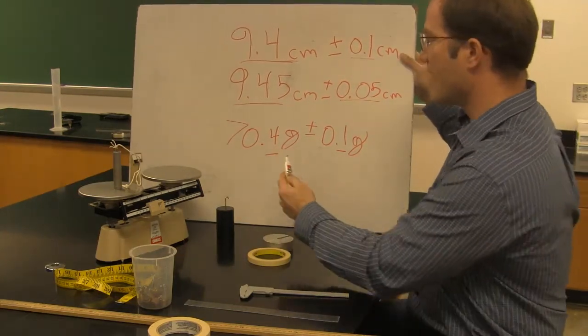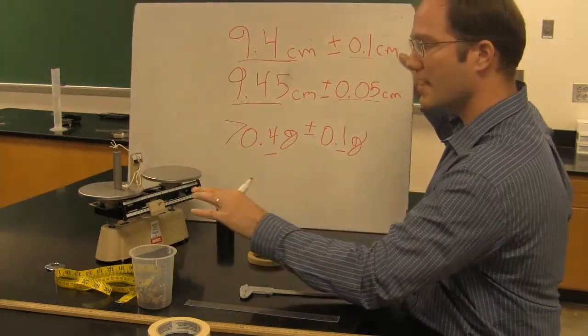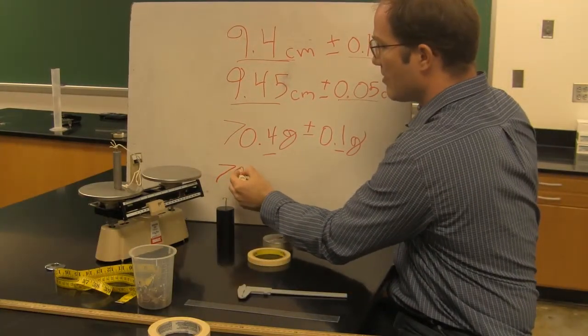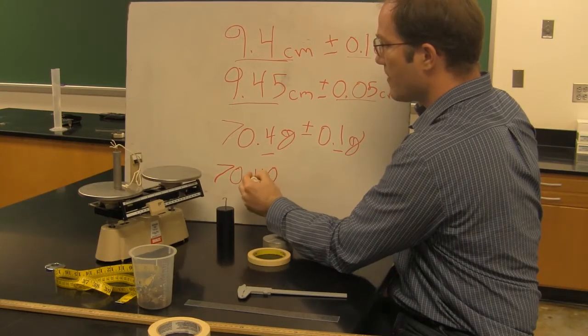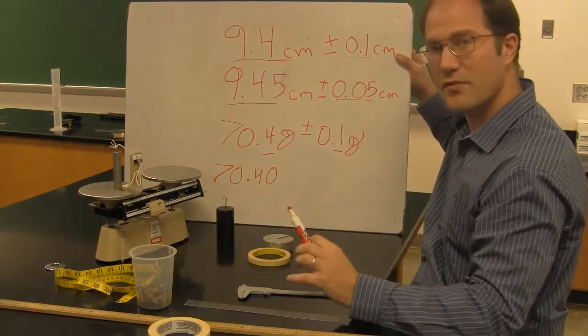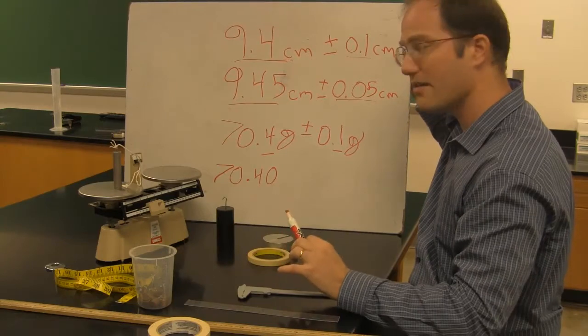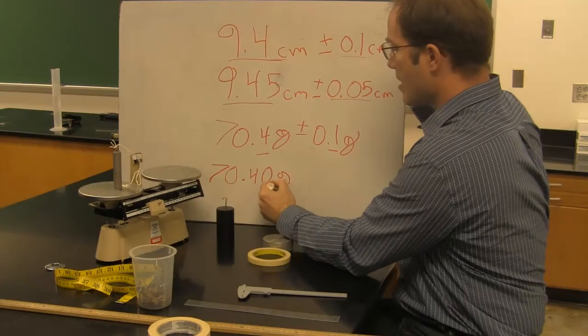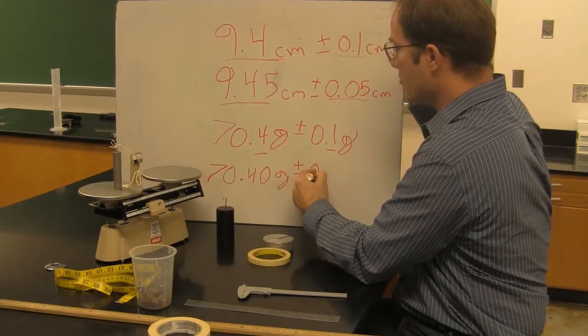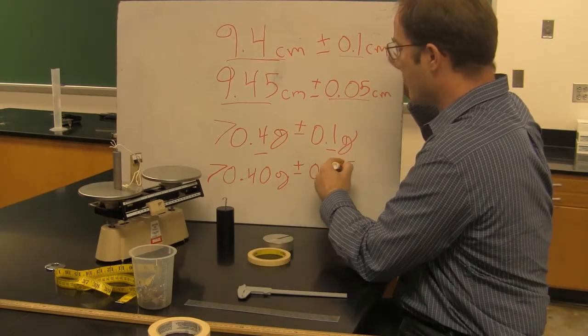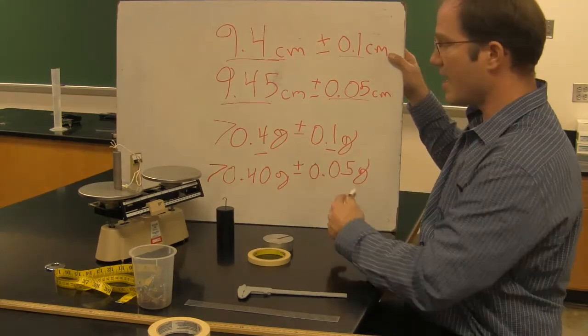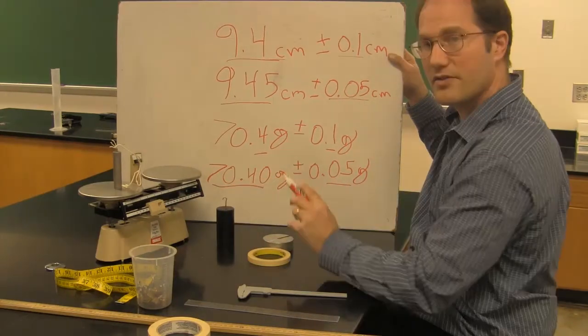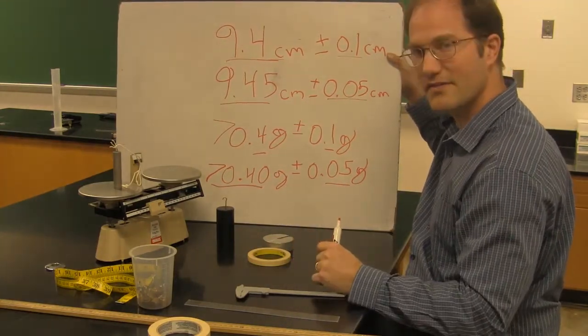And again, I can go beyond that. This is three significant figures. I can estimate to the nearest halfway point and say that looks like it's actually 70.40. In other words, it's closer to .40 than it is to .45 or .35 grams, plus or minus 0.05 grams. By estimating, I've increased my precision to the hundredths place, and now I have four significant figures.